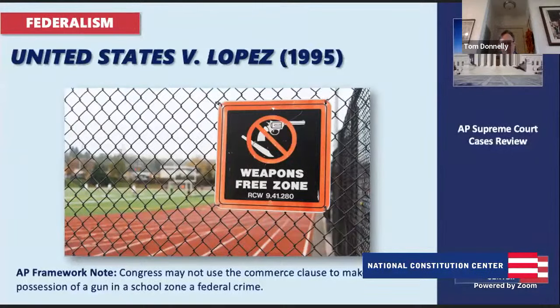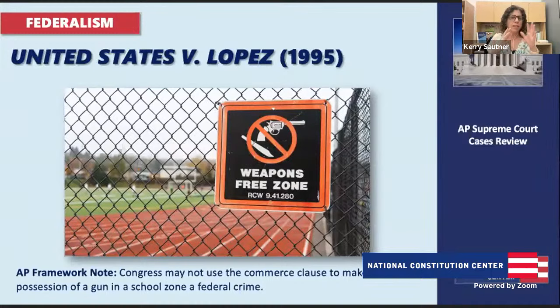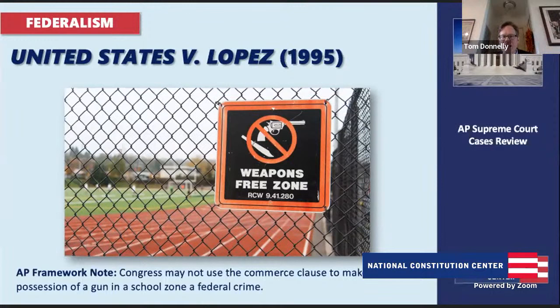Lopez represents one side of the spectrum — a limit on congressional power. On the other side, the classic case that set the high mark for congressional power is Wickard v. Filburn, involving a farmer growing produce on his own farm with no intent to sell. The Court still said Congress could reach that produce under the Commerce Clause — a case that makes one's head spin a bit.